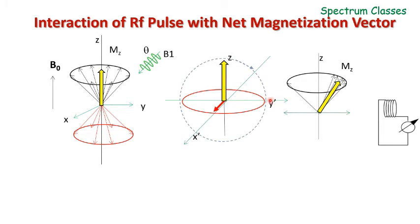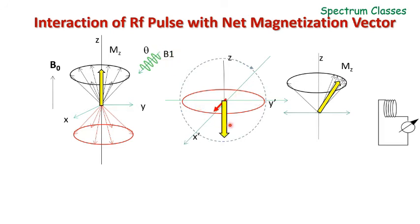If we apply a radio frequency pulse for 90 degrees, the net magnetization will be tipped to this position. If we apply it for 180 degrees, the system is reversed. Similarly, we can have other angles. At the moment when the B1 field is stopped, the net magnetization will stop at that position. For example, if it is stopped at a 45 degree angle, the receiver coil will receive only the component vector of the net magnetization vector.